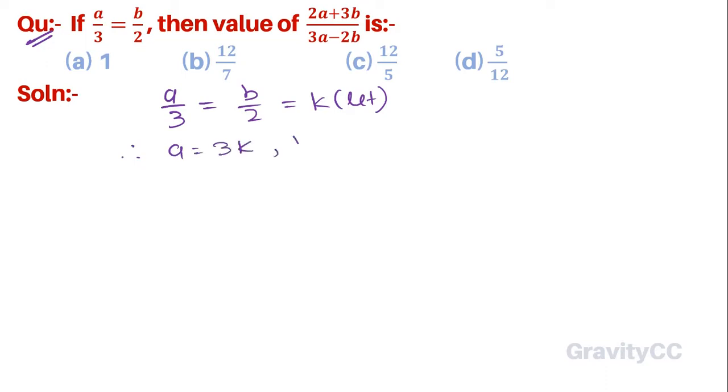And b = 2k. Therefore, (2a + 3b)/(3a - 2b) is equal to (2 × 3k + 3 × 2k)/(3 × 3k - 2 × 2k).